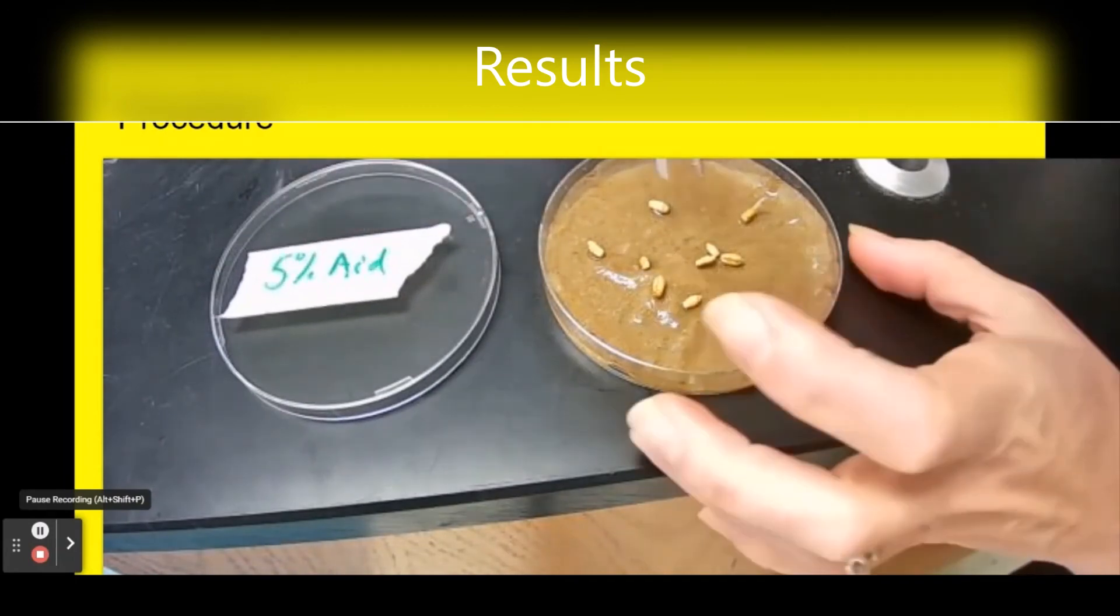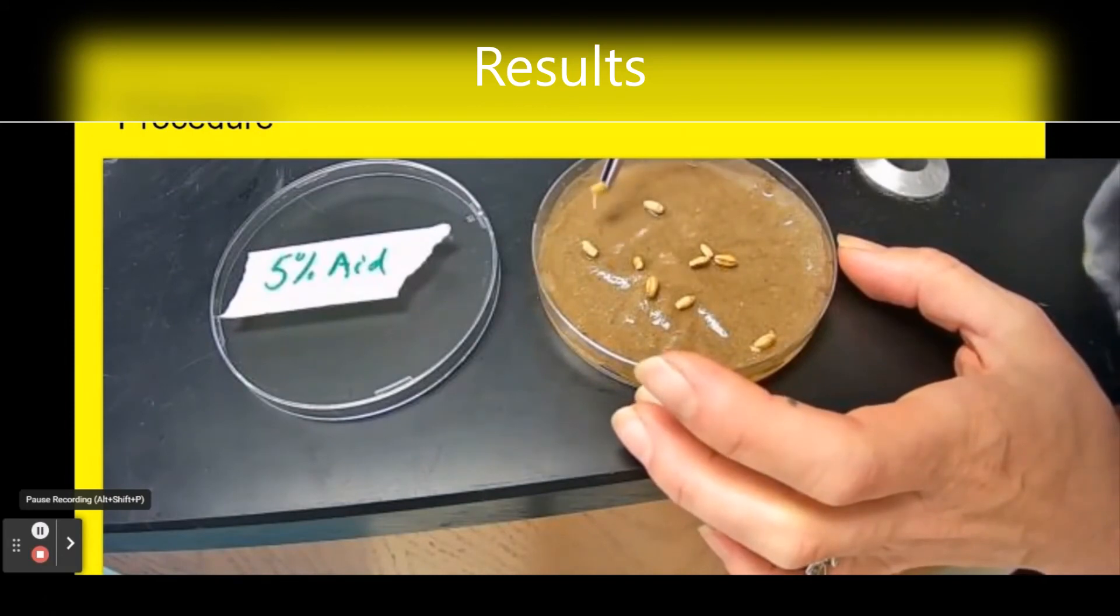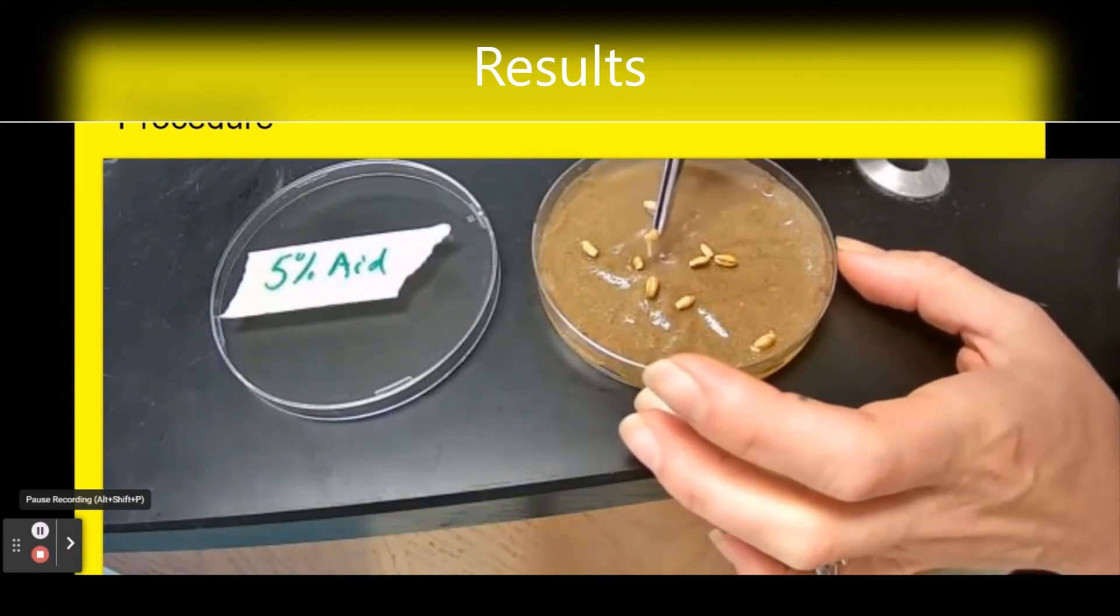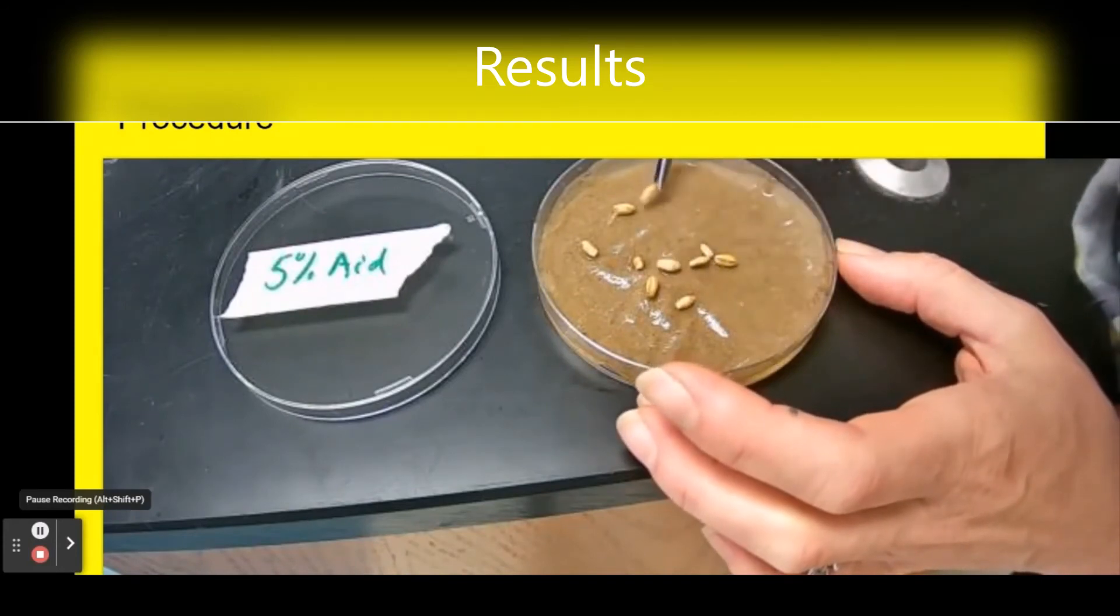Here we've got our five percent acid solution and looks like we've got one, you can kind of see a little bit of a sprout on that one that germinated a little bit, two. It looks like the rest did not.